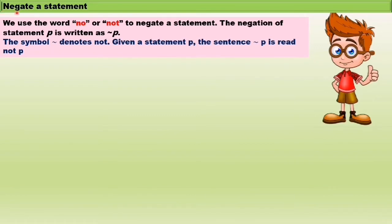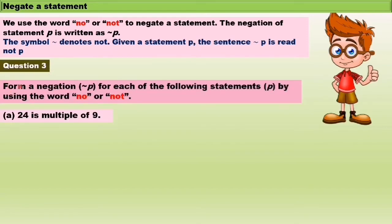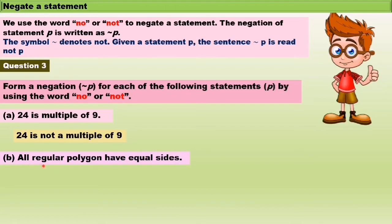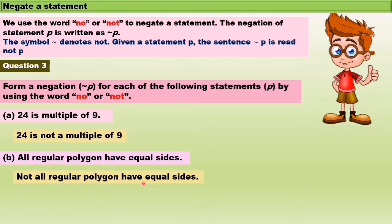After learning what a statement is, now we learn to negate a statement. We use the word 'no' or 'not' to negate a statement. The negation of statement P is written as tilde P. The symbol tilde denotes NOT. Given a statement P, the sentence tilde P is read as NOT P. Question number 3: form a negation tilde P for each of the following statements. A: '24 is a multiple of 9' — negation: '24 is not a multiple of 9.' B: 'All regular polygons have equal sides' — negation: 'Not all regular polygons have equal sides.'